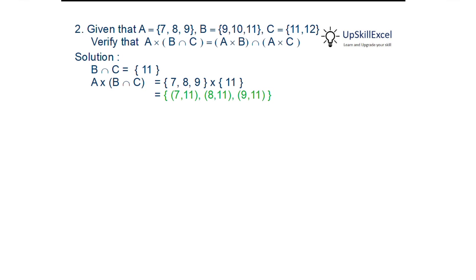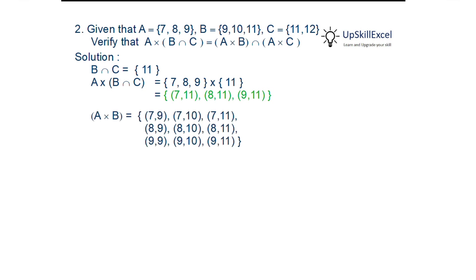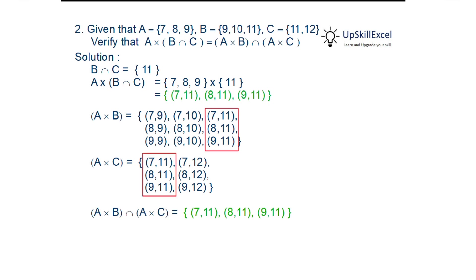On the right-hand side, we find A×B and its intersection with A×C. A×B has 3 elements from A and 3 from B, giving 9 elements. A×C has 3 elements from A and 2 from C, giving 6 elements. Taking the intersection gives the highlighted items: (7,11), (8,11), and (9,11), which is the same as the left-hand side.